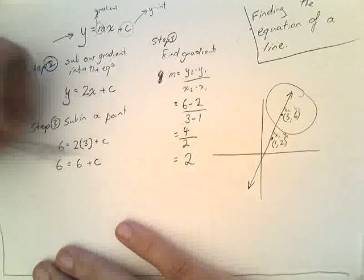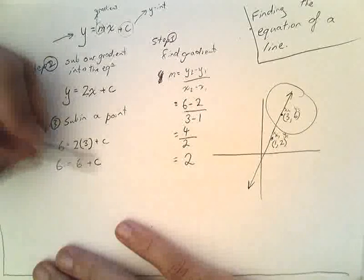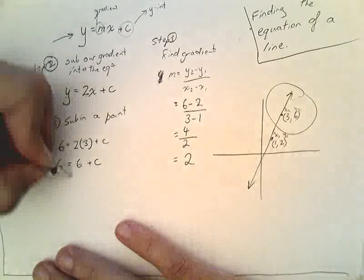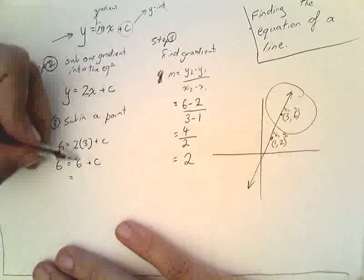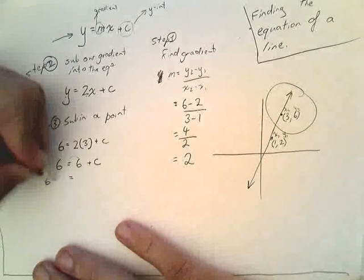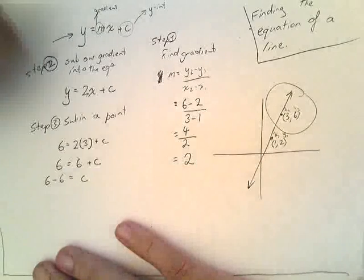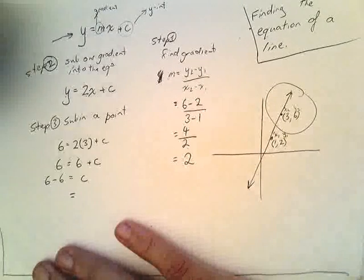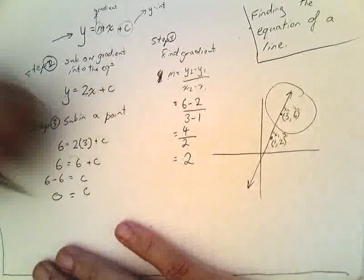Now, we're nearly done. All we need to do is figure out what c is. So, if I move this positive 6 from this side to this side, it becomes negative 6. So, it's going to be 6 minus 6 equals c. In this particular case, that means that c is equal to 0.